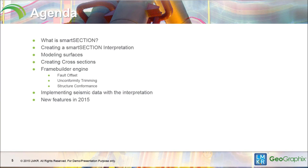This is our agenda. We're going to talk about what Smart Section is, then create a Smart Section interpretation, look at modeling some surfaces, and create some cross-sections. Then we'll look at the Frame Builder engine, fault offsetting, unconformity trimming, and structure conformance. Finally, we'll look at implementing seismic data and some new features in the 2015 release that I think a lot of people are going to like.